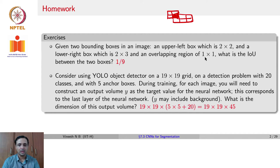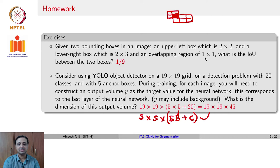The second question: consider using YOLO on a 19x19 grid, with 20 classes and 5 anchor boxes. The output volume would be S×S×(5B + C), where B is the number of anchor boxes and C is the number of classes. We assume here that C also includes the background. If you want background as a separate class, you will have to add C to be 21.